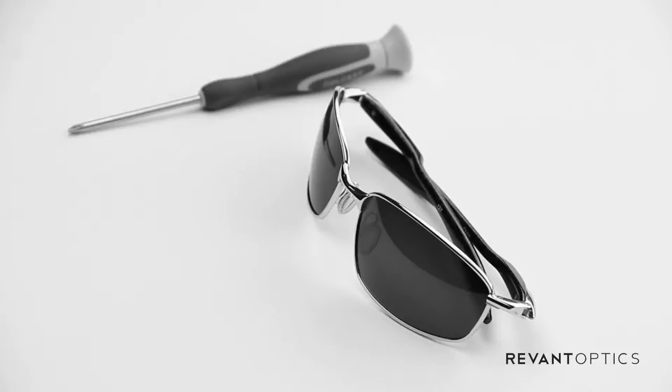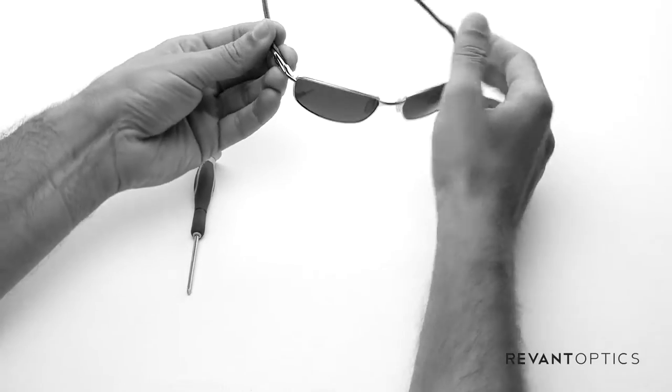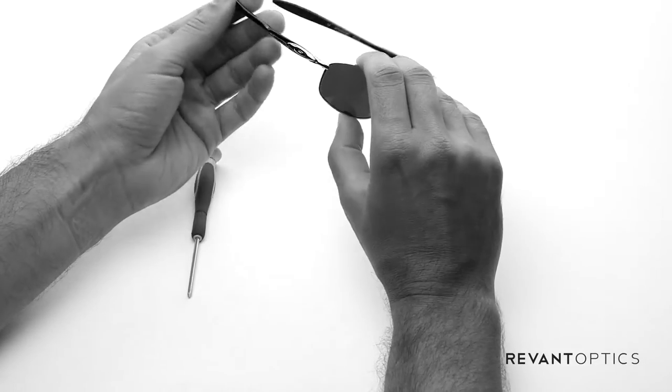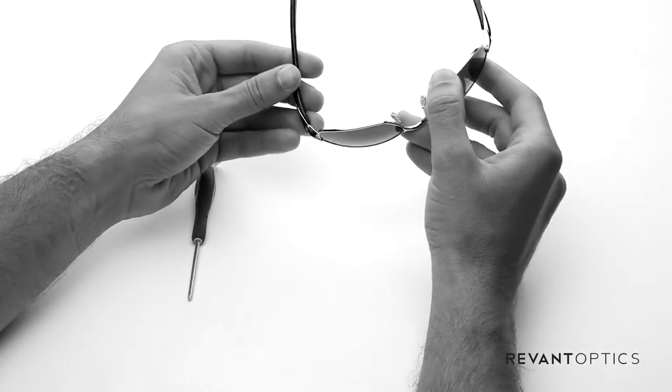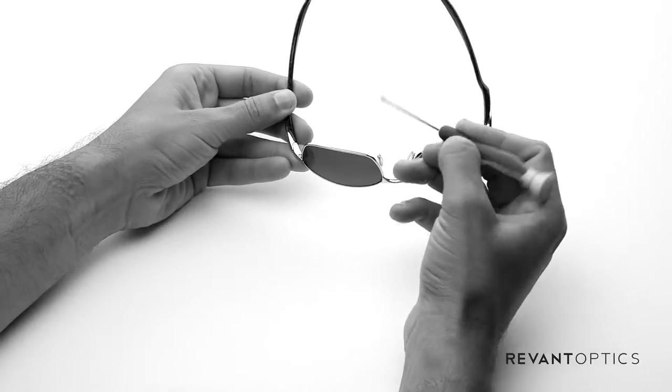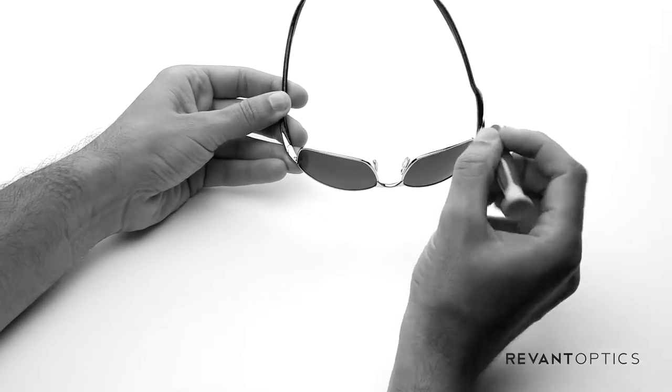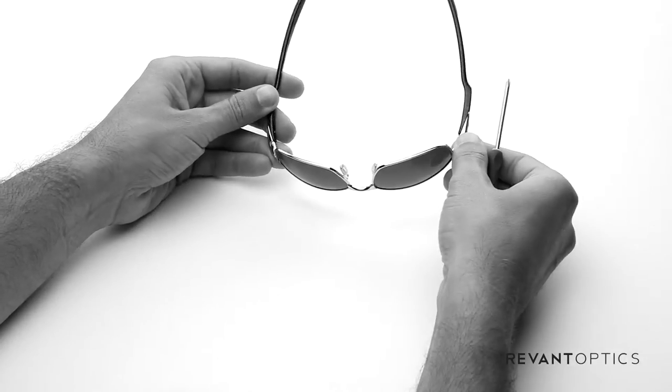Today I'm gonna show you how to replace the lenses in your Oakley Blender sunglasses. This frame has a metal front with plastic side temples here, and you'll need a Phillips head screwdriver, a small one, to remove the lenses.